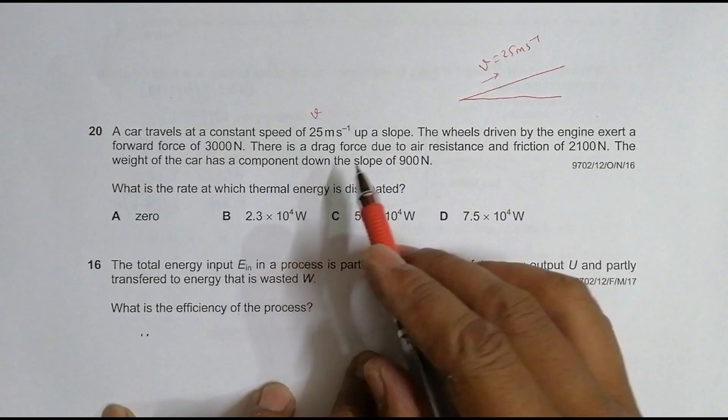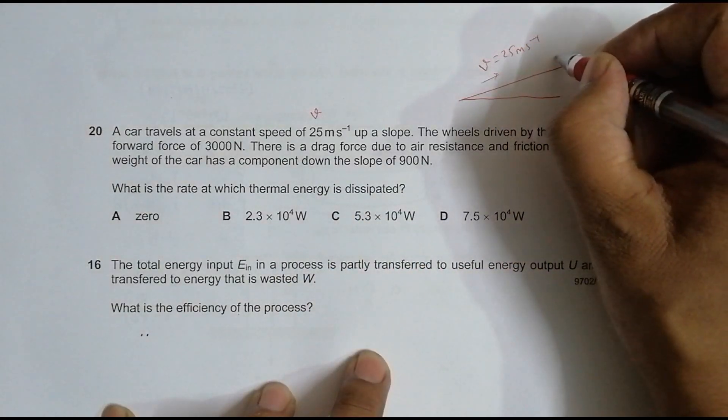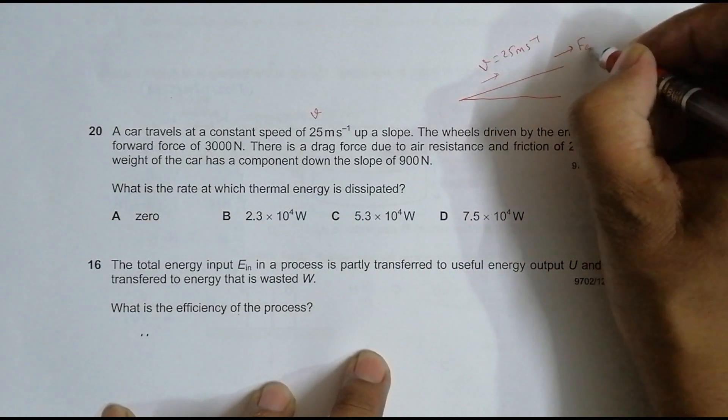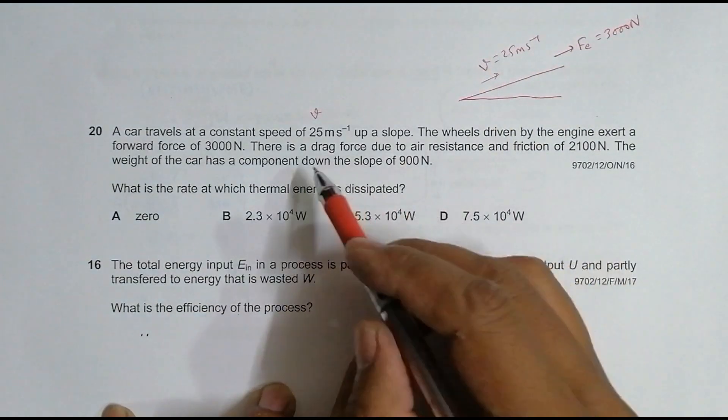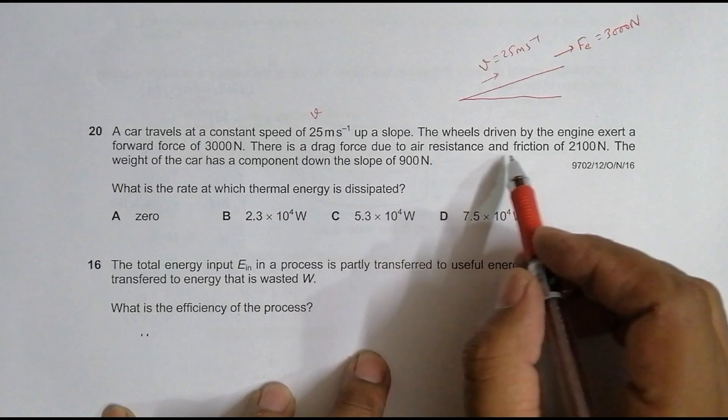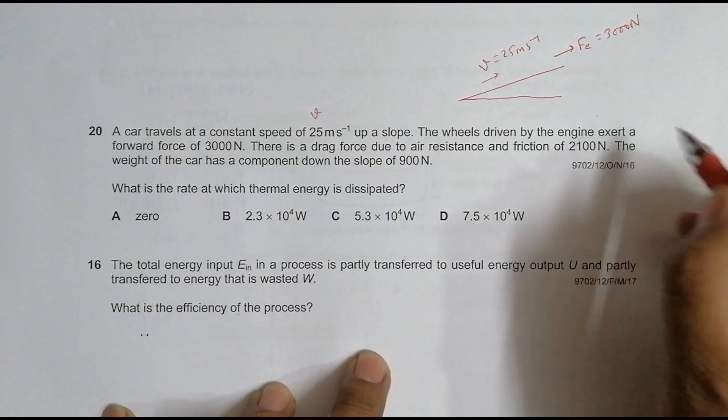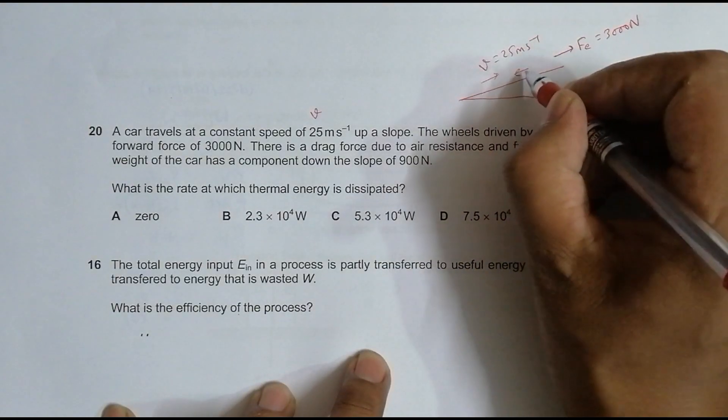The wheels driven by the engine exert a forward force of 3000 Newtons, so the force applied by the engine is equal to 3000 Newtons. There's a drag force due to air resistance and friction.